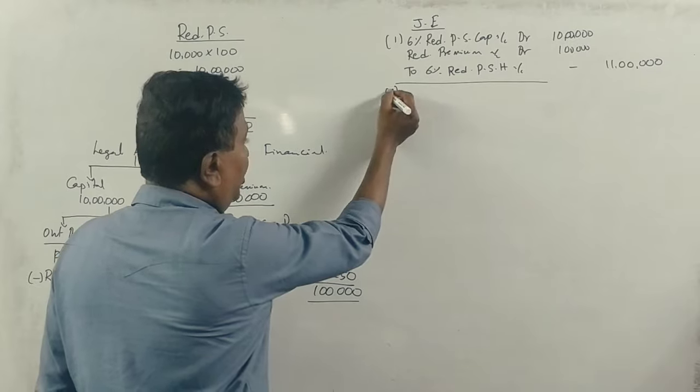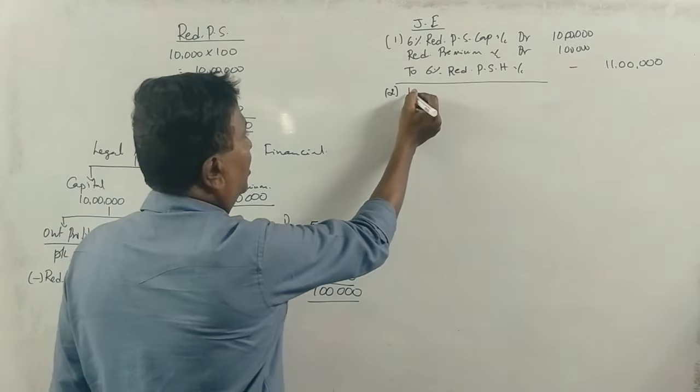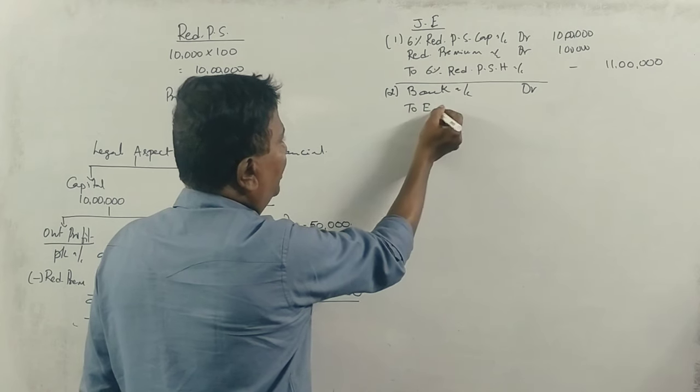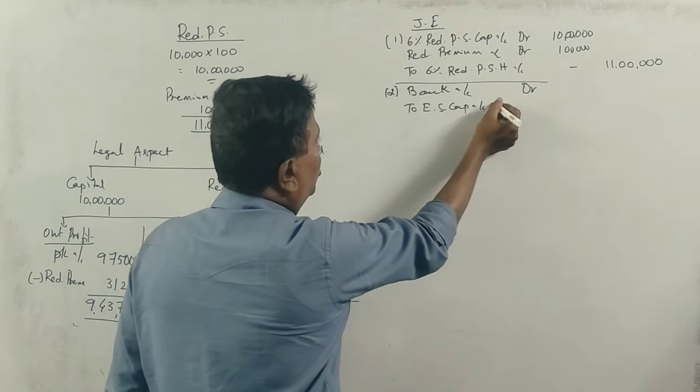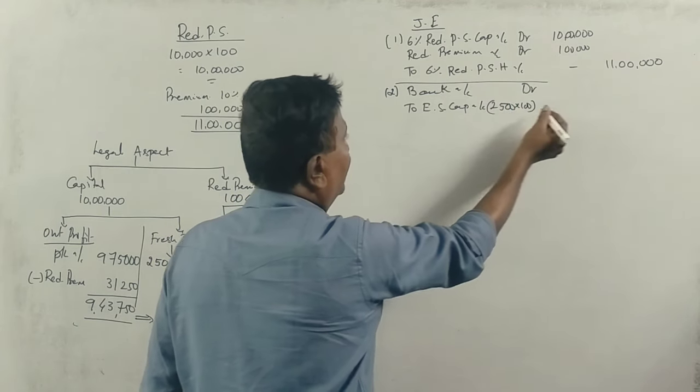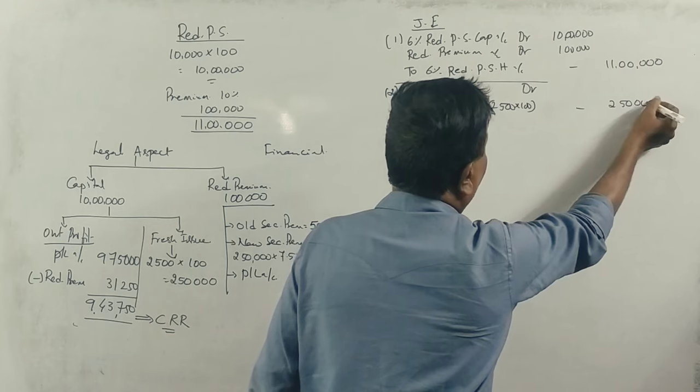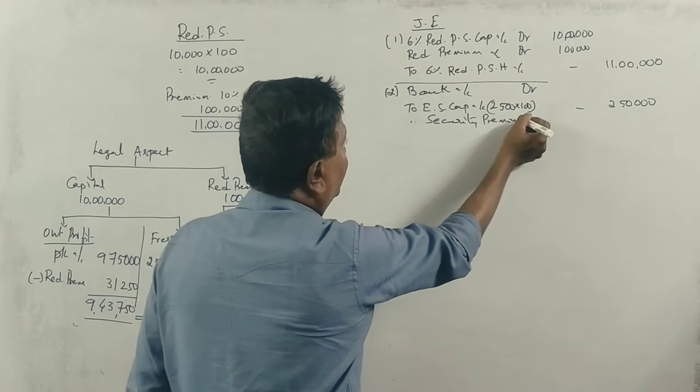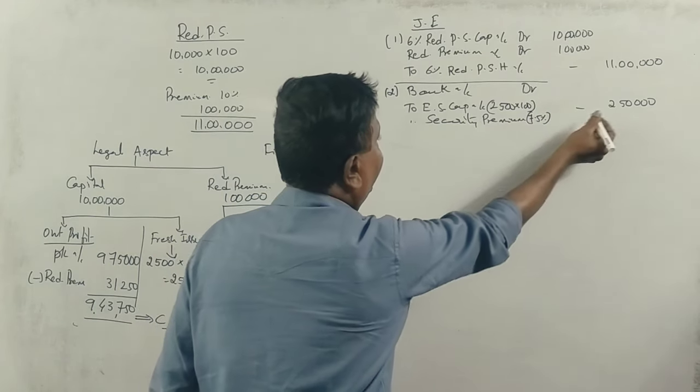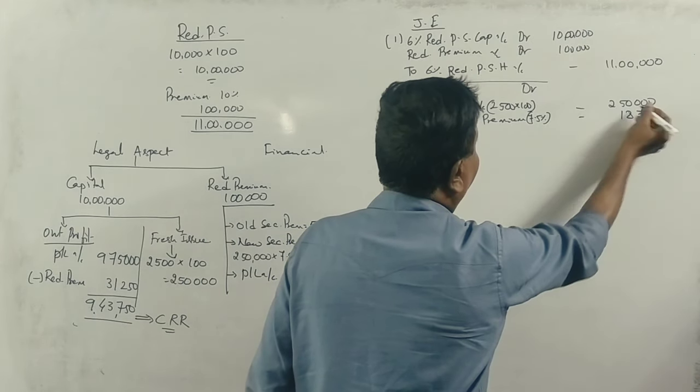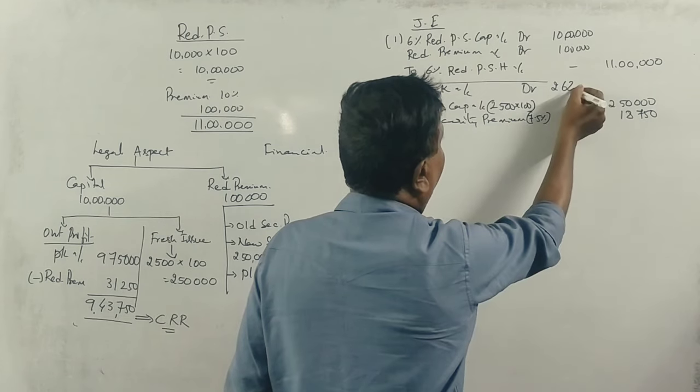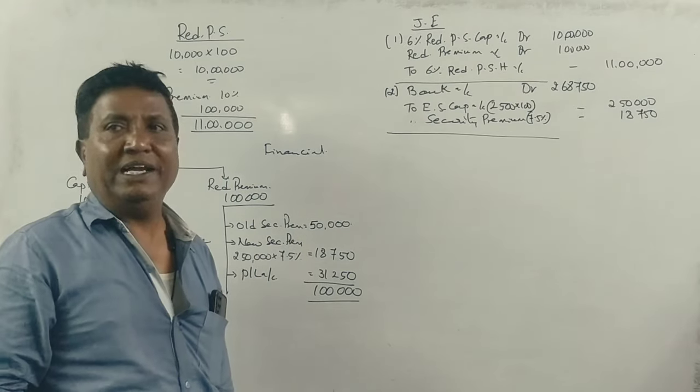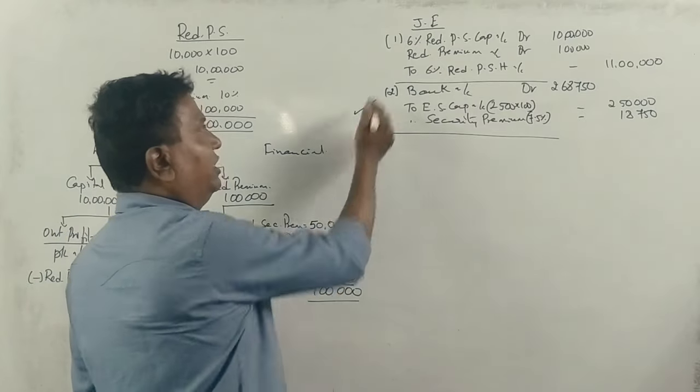Next journal entry is to issue the shares. Bank Account debit 2,68,750, to Equity Share Capital Account 2,50,000 (2,500 shares at 100 rupees), and to Securities Premium Account 18,750 (7.5%). Total cash received in the bank is 2,68,750 rupees. Being shares issued to public at premium.